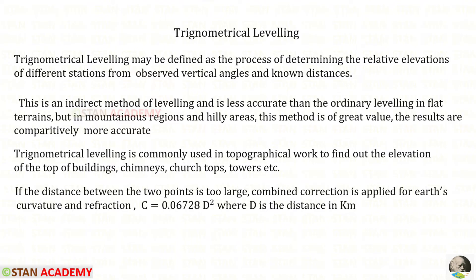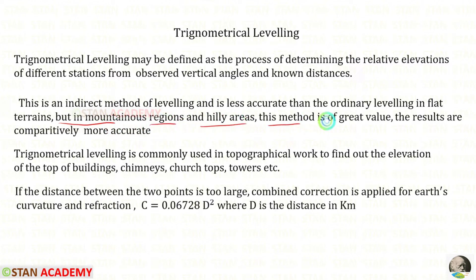In trigonometrical leveling, we will find elevations by measuring the vertical angles and distances. This is an indirect method of leveling and is less accurate than ordinary leveling. But in mountainous regions and hilly areas, this method is of great value and the results are comparatively more accurate.